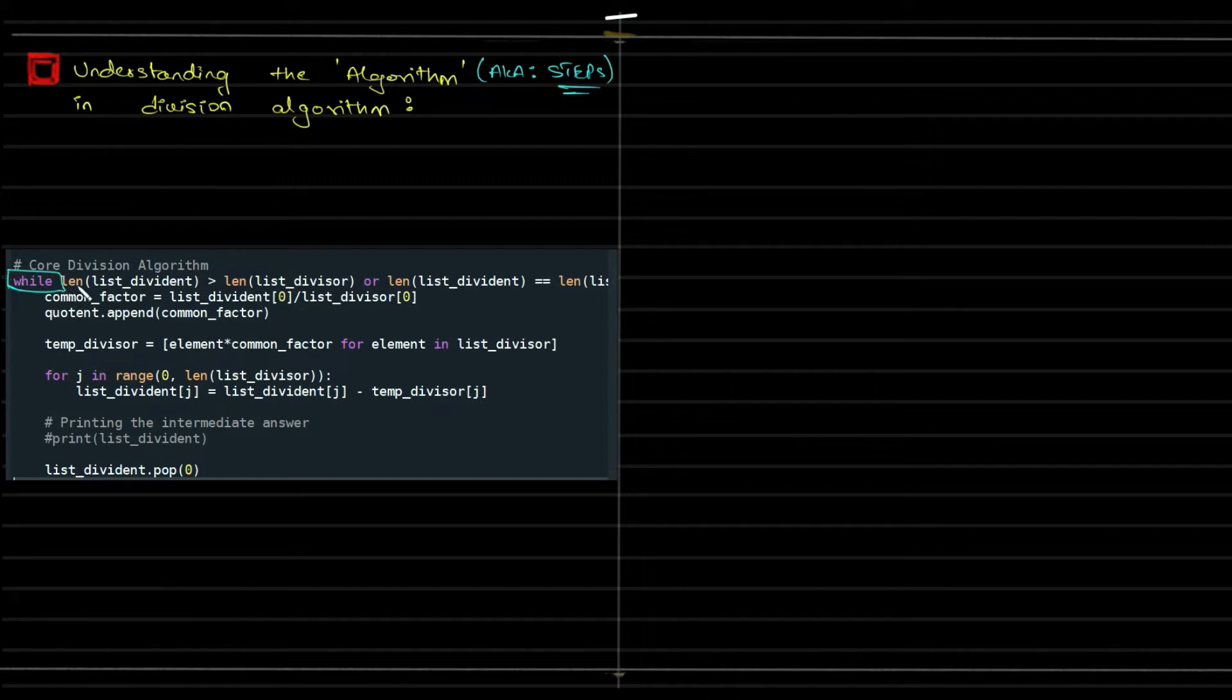While is the condition link, while this condition is there, you keep executing this. So what is the condition? The length of the dividend is greater than the divisor, or length of the dividend is equal to the length of the divisor. If any one of this condition is satisfied, this loop will keep executing. It makes sense.